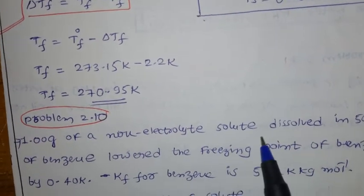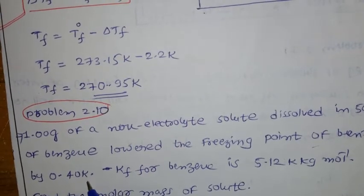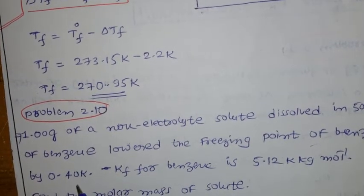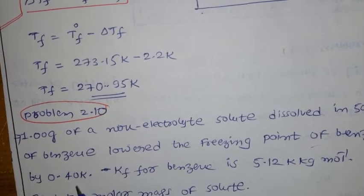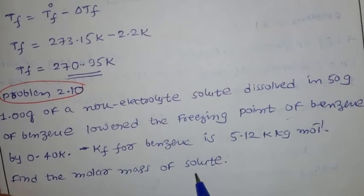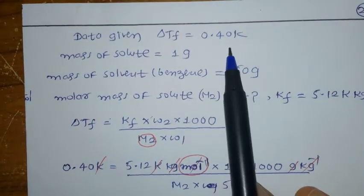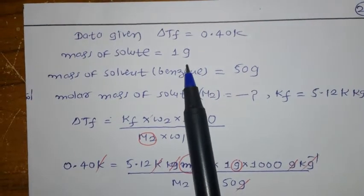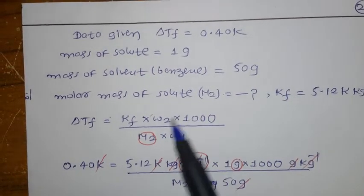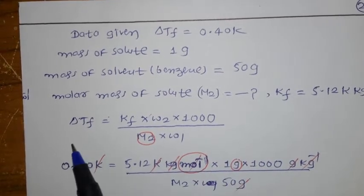Problem 2.10: 1 gram of a non-electrolyte solute dissolved in 50 grams of benzene lowers the freezing point of benzene by 0.40 kelvin — so ΔTf = 0.40 K. Kf for benzene is given as 5.12 kelvin·kg per mole. We need to find the molar mass of the solute. Given: ΔTf = 0.40 K, mass of solute = 1 g, mass of solvent = 50 g.